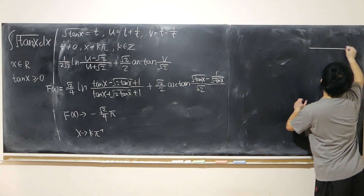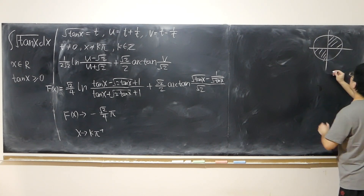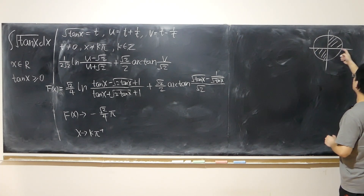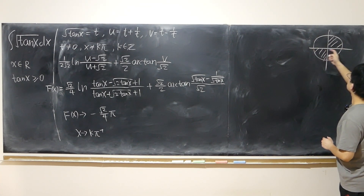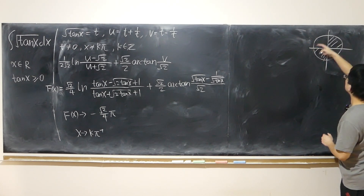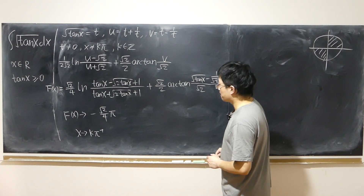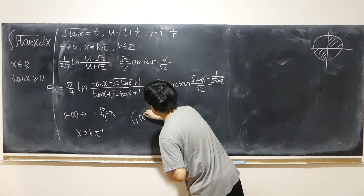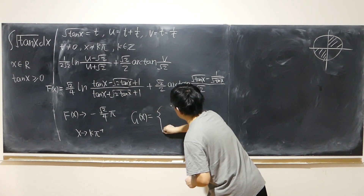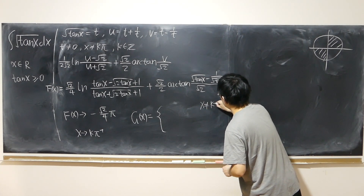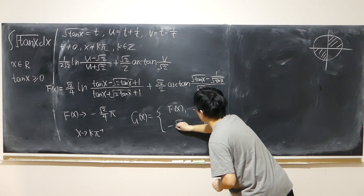The reason is that to ensure tangent x is positive, x must live in the first and third quadrant. So k pi is the boundary point. Therefore I must construct a piecewise function, because F(x) is not defined at these points. The piecewise function: equal to F(x) when x is not equal to k pi, and equal to negative root 2 over 4 times pi when x equals k pi. That way the piecewise function is continuous at k pi, since its functional value equals the limit value.